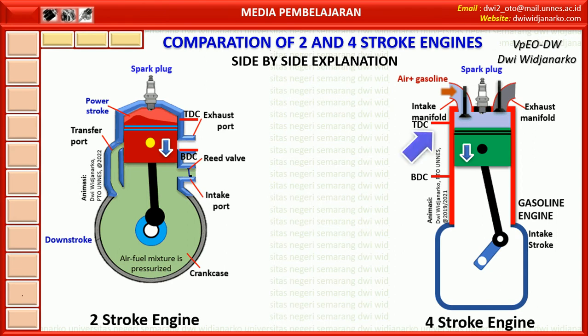In the picture on the right, the 4 stroke engine is in the intake stroke position. The intake valve is open and the exhaust valve is closed. The piston moves from top dead centre to bottom dead centre. As the volume of the cylinder increases, the pressure decreases so that the air and fuel mixture is sucked into the cylinder. On the left is the 2 stroke engine. The piston moves down from top dead centre to bottom dead centre in a downstroke, or power stroke, due to combustion pressure. As the piston moves down, the volume of the crankcase decreases so that the pressure increases. The crank chamber contains a mixture of air and fuel, which previously entered from the intake port.